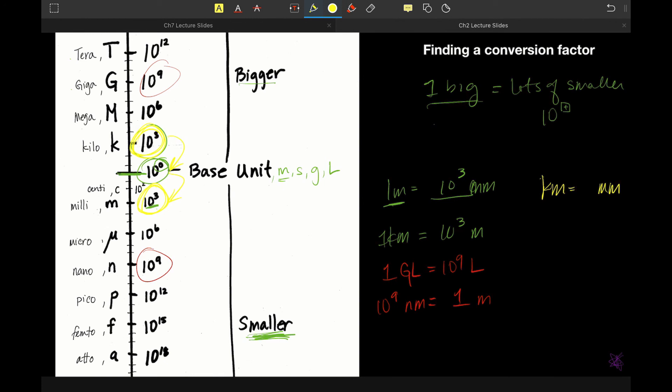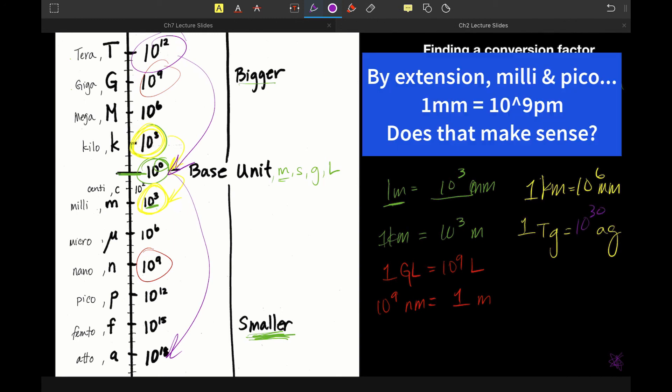So same thing, which one's bigger? Kilometers bigger, 10 to the sixth millimeters. Or let's say we wanted to come up with a relationship between teragrams and attograms. So which of these is bigger? Terras. And to count our teragrams from terra to the base unit is 12, from the base unit to attos is 18. So 18 plus 12 is 10 to the 30th attograms. Always lots of little things to one big thing. Does that make sense?